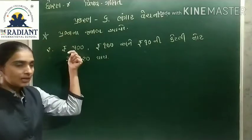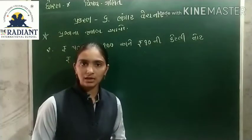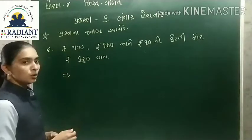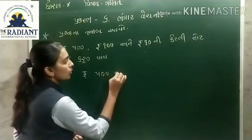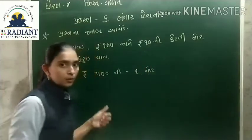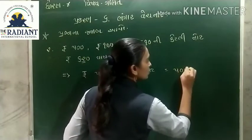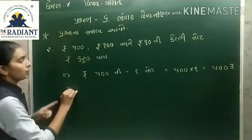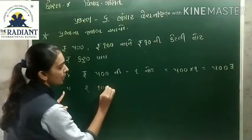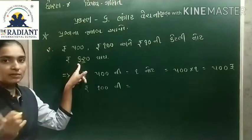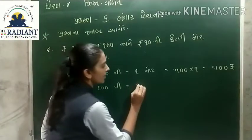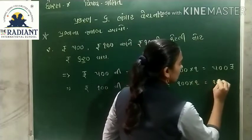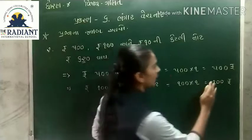તો હવે: મારી પાસે 500 રૂપ્યા ની નોટ કેટલી હશે, અને 10 રૂપ્યા ની નોટ કેટલી હશે? અહ્યાં જુઓ, 600 ને 20 રૂપ્યા છે. મારી પાસે 100 રૂપ્યા — 100 ની 1 નોટ. 100 ગુણ્યા 1 = 100 રૂપ્યા. આપણે 100ની નીચે 1 લખી દઈએ.